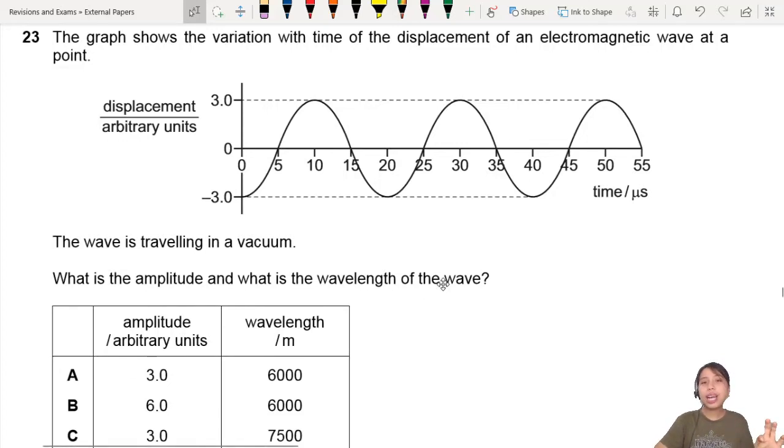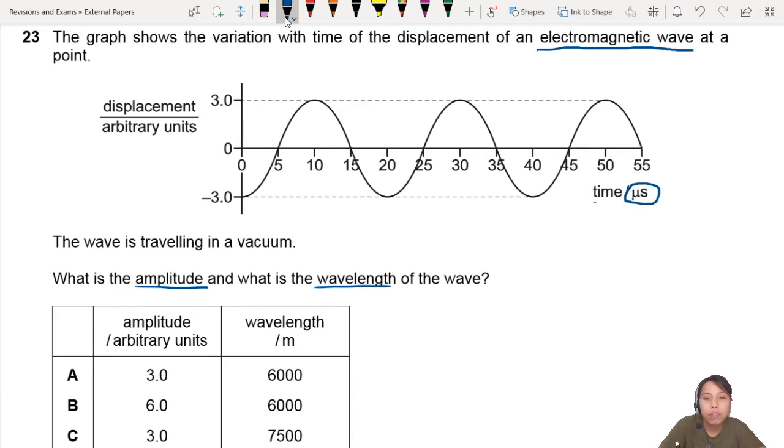The graph shows the variation with time of the displacement of an electromagnetic wave at a point. This is a good thing to underline if you didn't. Displacement in arbitrary units against time. Be careful, this unit is in microseconds, and this unit is arbitrary, so they don't care what it is. The wave is traveling in a vacuum. What is the amplitude and what is the wavelength of the wave?